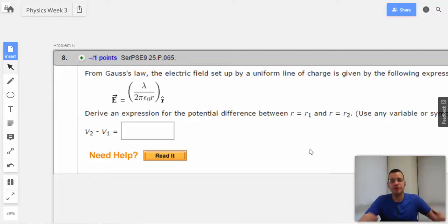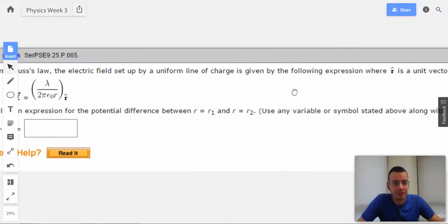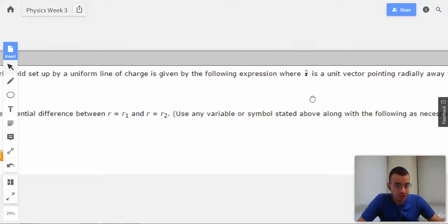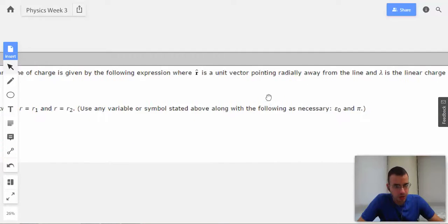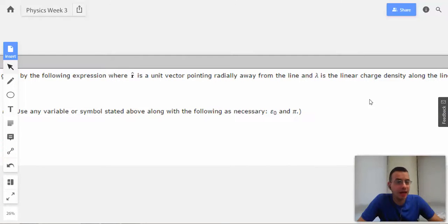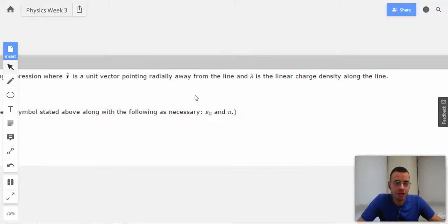Problem 8. From Gauss's Law, the electric field set up by a uniform line of charge is given by the following expression. Yes, they already gave it to us. Where R is a unit vector pointing radially outward away from the line and lambda is a linear charge density along the line.